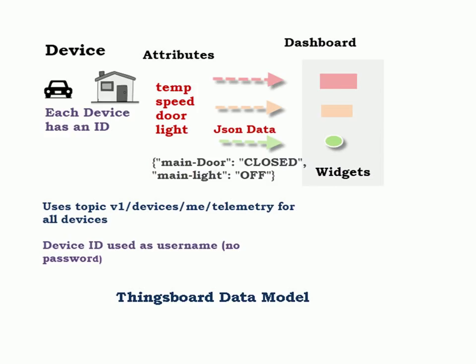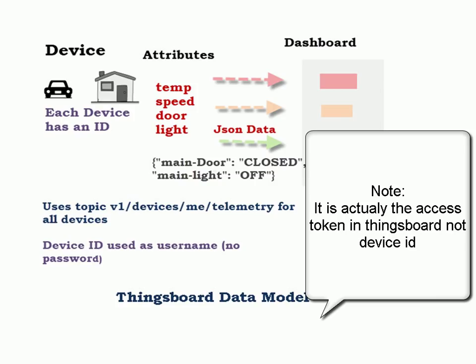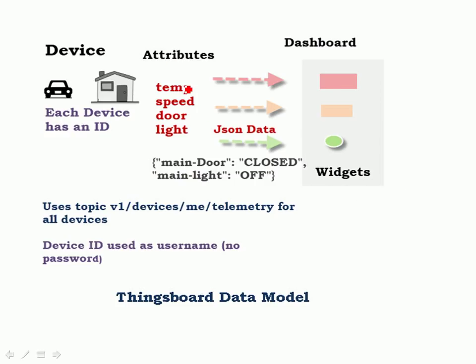Before we actually go in and create the dashboard, I just want to outline the ThingsBoard data model that you need to be aware of. It all starts off with a device. A device or an object can represent a car, a house, or any external object. Each device has an ID, and we're going to use this device ID to identify the device to ThingsBoard. Devices have attributes like temperature, speed, door open and close, light on or off.